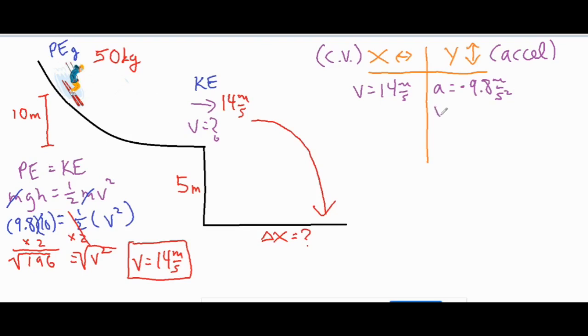We can also put Vi equals 0 meters per second in the Y column. Although the person is not at rest, they're not moving upwards or downwards right at the edge of the hill, so their vertical velocity is 0, although their horizontal velocity is 14.